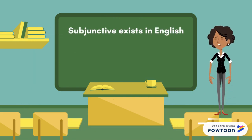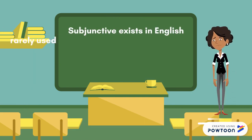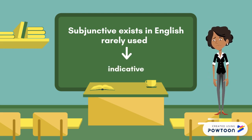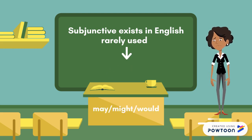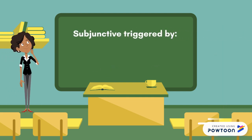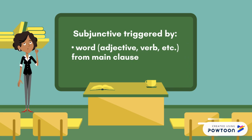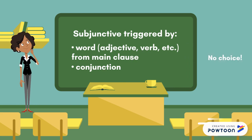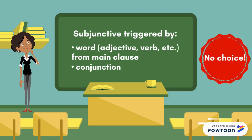The subjunctive does exist in English, but it is rarely used. The indicative or expressions such as 'may,' 'might,' 'would' are used instead. Generally, the subjunctive is triggered in French by a word — adjective, verb, and so on — from the main clause or by the conjunction. The speaker does not have a choice and must use the subjunctive.